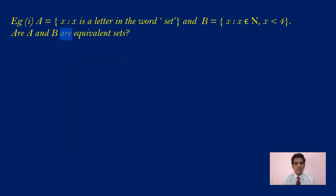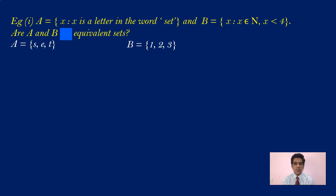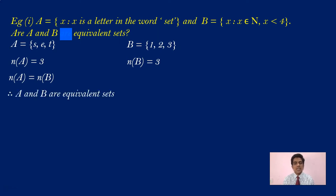Have a look at these examples. Example 1: A = {x | x is a letter in the word SET} and B = {x | x ∈ N, x < 4}. Are A and B equivalent sets? A = {S, E, T}, and B = {1, 2, 3}. How many elements are there in A? 3, so n(A) = 3. What is the number of elements in B? It is again 3, so n(B) = 3. Are n(A) and n(B) equal? They are equal. Therefore, since n(A) = n(B), A and B are equivalent sets.